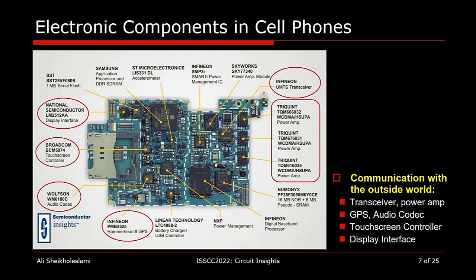We use electronics to store information. There are components in your cell phone that process information for you — these are application processors and digital baseband processors. And then there are components that help us communicate information: transceivers that help you send and receive emails, power amplifiers to make sure your signal can reach the base station, GPS for navigation, an audio codec to turn your voice to bits and vice versa, touch screen controllers to translate your touch to information, and a display interface to turn the information inside the memory to something you can see.